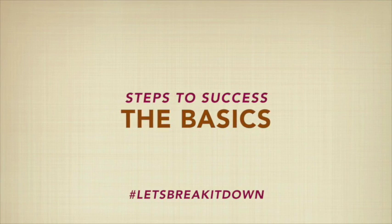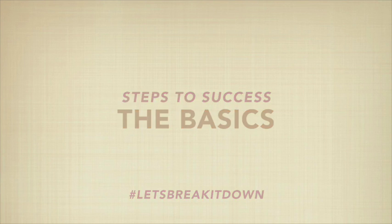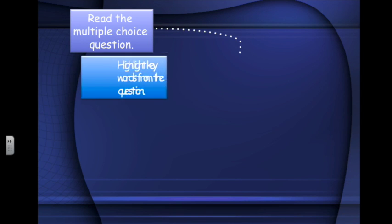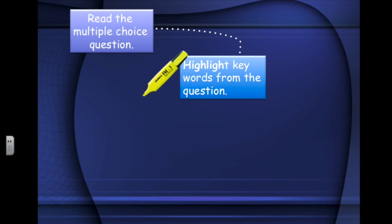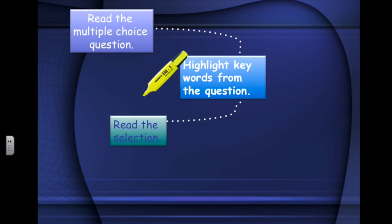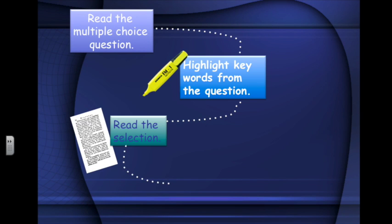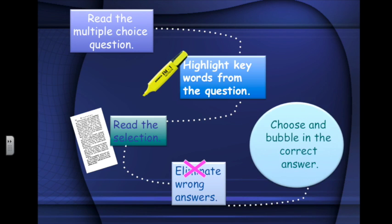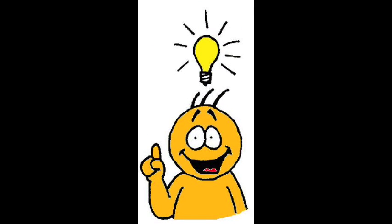So what are the steps you need to take in order to be successful on these reading and writing tasks on the literacy test? Let's break it down step by step. Before you read the actual story, read the multiple choice questions and highlight keywords to focus your reading. Then go back and read the text, highlighting key phrases or terms. Turn back to the question page, eliminate any wrong answers, then choose and bubble in the correct choice.